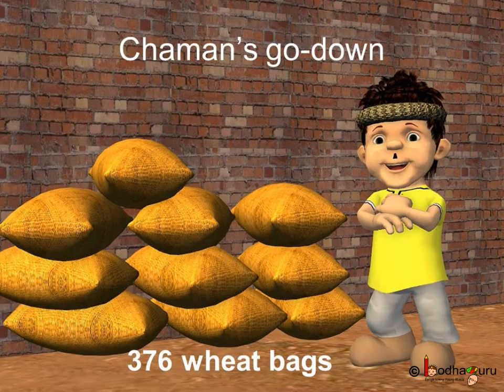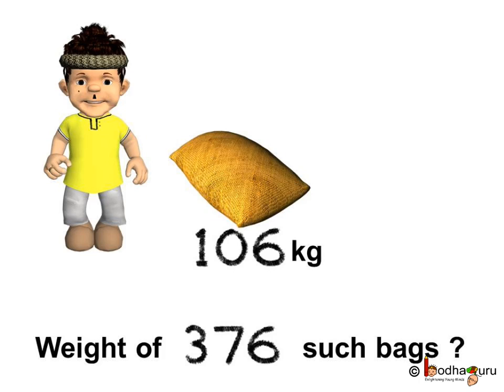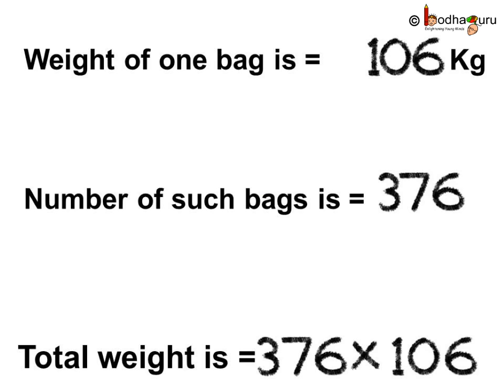Let us see Chaman's godown. There are 376 wheat bags in Chaman's godown. If each bag weighs 106 kgs, find the total weight of 376 such bags. Let us see what we need to find. The weight of one wheat bag is equal to 106 kgs. The number of such bags is equal to 376. Now we need to find the weight of 376 bags.